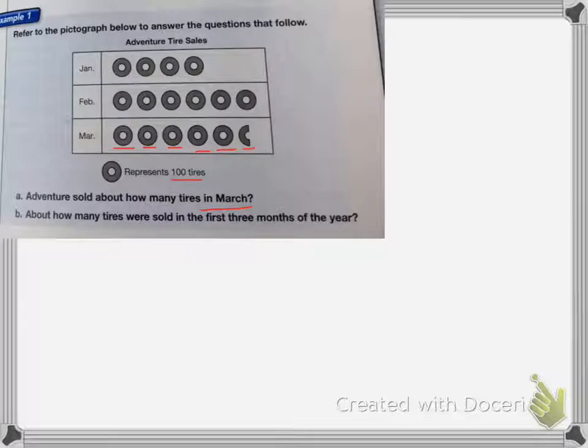And then I have half a tire. So half of 100 is 50. So they sold 550 tires in March.